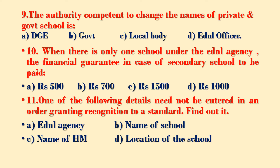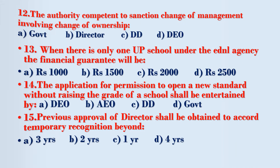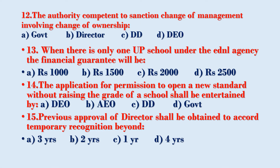Which of the following details need not be entered in an order granting recognition to a standard? Option A – educational agency, Option B – name of school, Option C – name of HM, Option D – location of the school. The authority competent to sanction change of management involving change of ownership: Option A – Government, Option B – Director, Option C – DD, Option D – DEO.